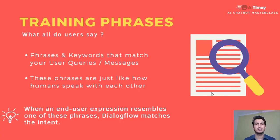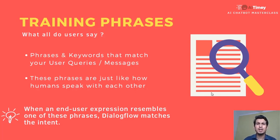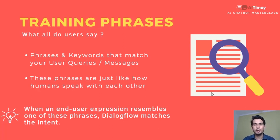The question that arises is: how is Dialogflow finding the right intent for your user query? We need to understand that Dialogflow finds the right intent and gives the answer accordingly — but how is it classifying, how is it actually finding out that this is the right intent according to the user query that has come in?